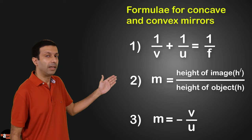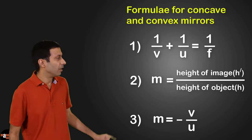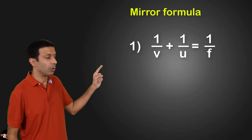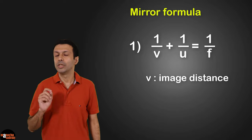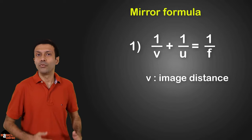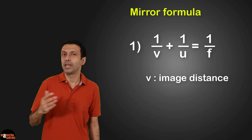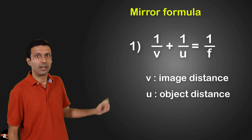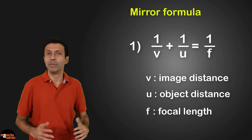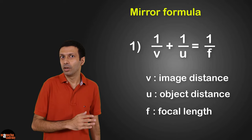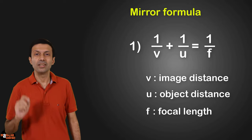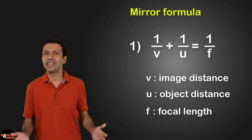Now let's take a look at the formulae for concave and convex mirrors. The first formula is called the mirror formula: 1/V + 1/U = 1/F. Here V is the image distance — the distance from the pole to the image. U is the object distance, the distance from the pole to the object. And F is the focal length of the mirror, the distance from the pole to the focus. These distances have a sign, positive or negative, based on the sign convention.